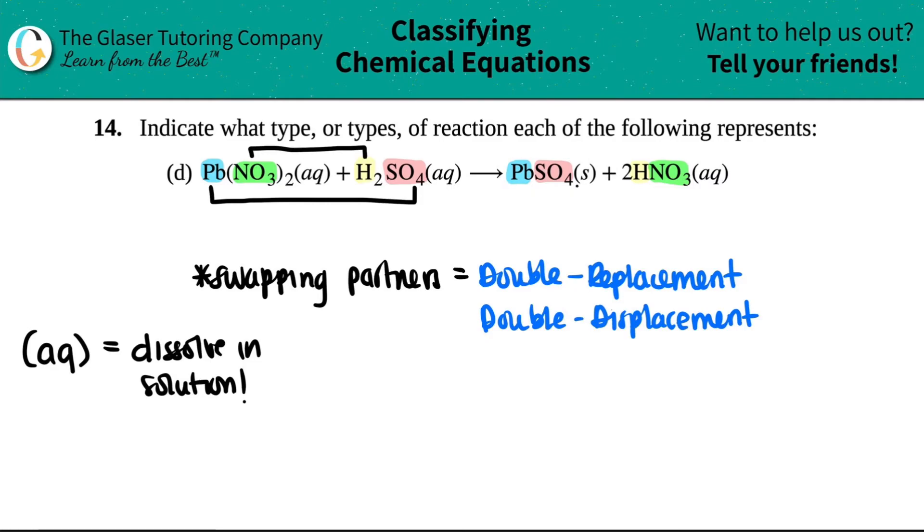But the products form a solid. If you form a solid from two aqueous matter, you formed a precipitate. A precipitate is a fancy word of saying a solid. So precipitate, solid, tomato, tomato.